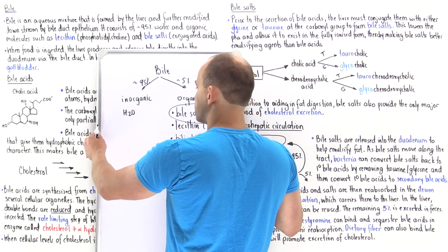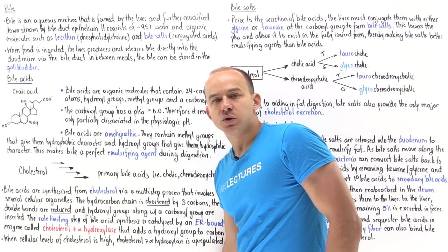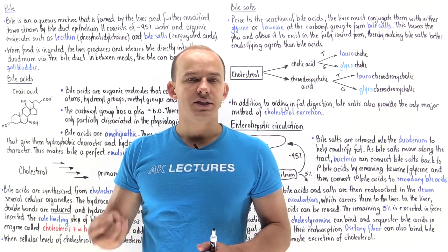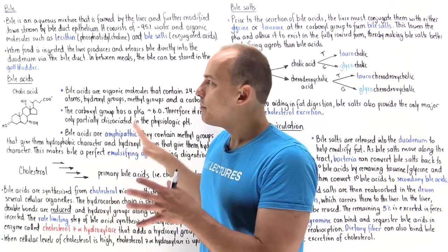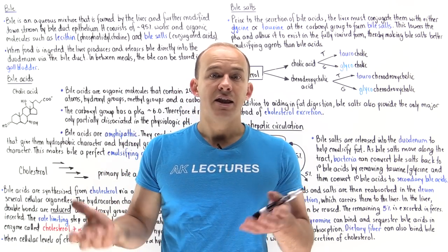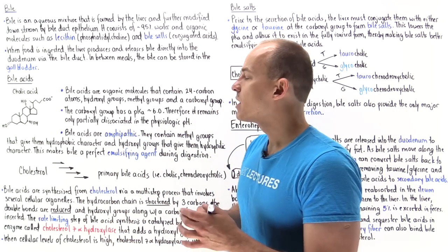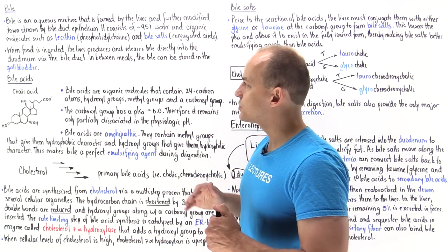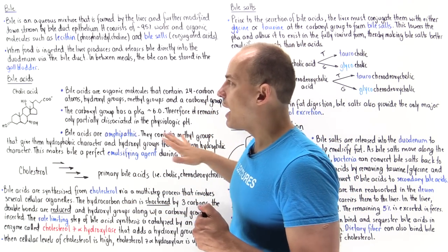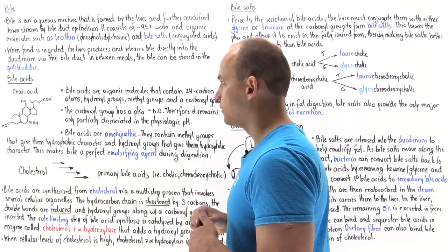Because bile salts are by far the major organic molecule, this is what we'll focus on in this lecture. When we ingest food rich in fat, the liver synthesizes and releases bile directly into the duodenum. Bile emulsifies the fat, preparing it for absorption by the enterocytes — the cells of our small intestines. Between meals, bile can be stored in the gallbladder, which is found right below the liver.